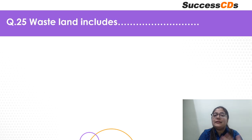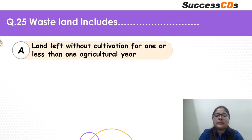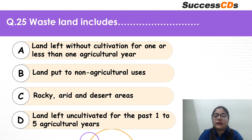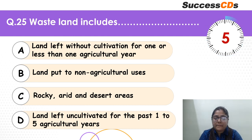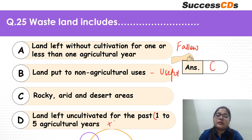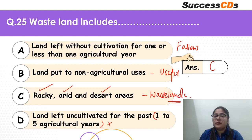The last question for today: waste land includes — land left without cultivation for one or less than one agricultural year? Land put to non-agricultural uses? Rocky, arid and desert areas? Or land left uncultivated for the past one to five agricultural years? The correct answer is C. Option A is current fallow. Non-agricultural land is still useful. The other option is uncultivated for a certain time period — not a wasteland. Rocky, dry and desert land is wasteland because very little can be done with it.